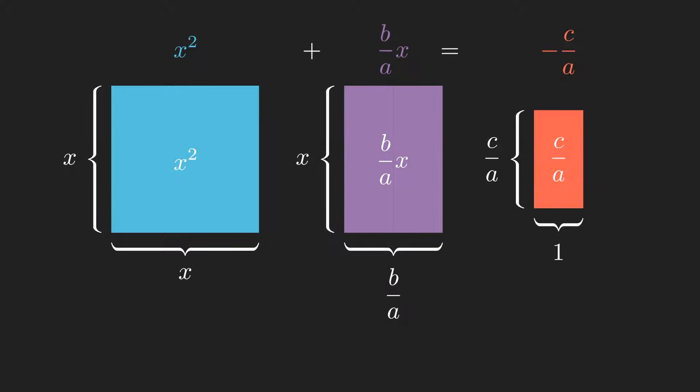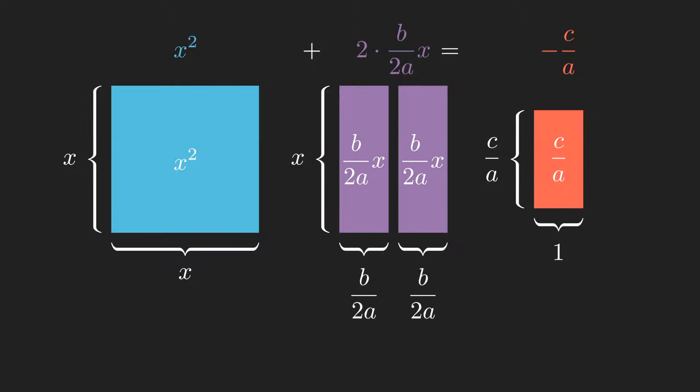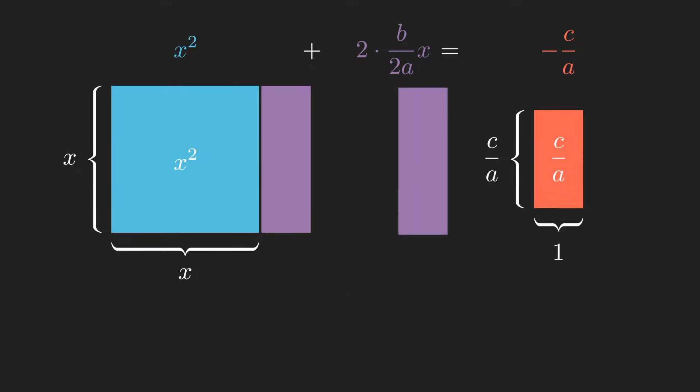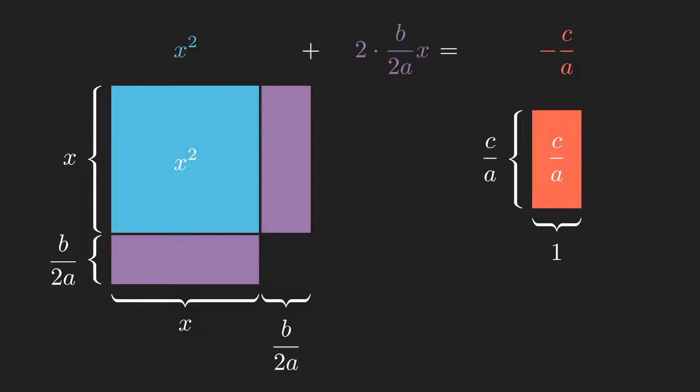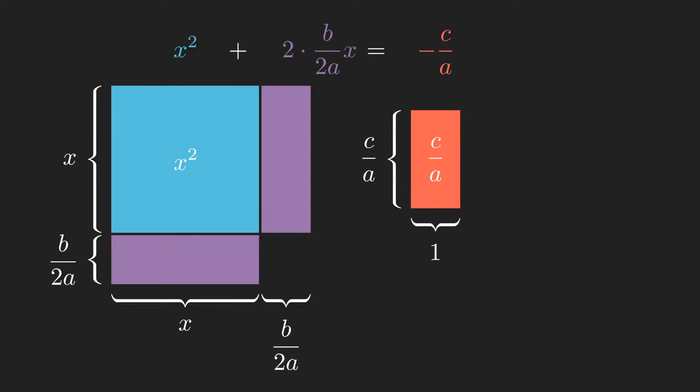Now we take our middle rectangle and split it into two even parts, these parts of the area b over 2a times x. We move these pieces onto either side of our square. Notice that when we do this, we get a shape that's very nearly a new square, just missing a small piece from the corner. We can clearly see that the area of this smaller piece is b over 2a all squared.